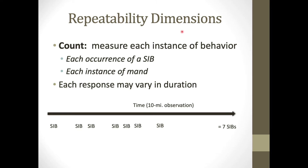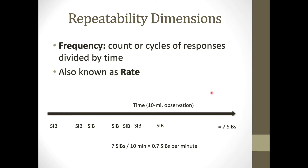For the dimension of repeatability, the primary measure is a count — measuring each instance of behavior. For example, observing a client for 10 minutes and counting each instance of self-injurious behavior. If there were seven instances in 10 minutes, we can convert that to a frequency: 7 divided by 10 minutes equals 0.7 SIBs per minute.